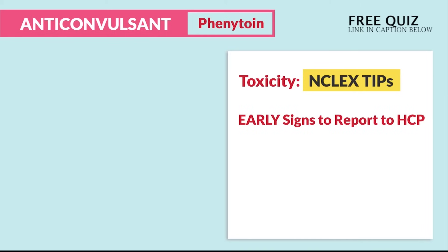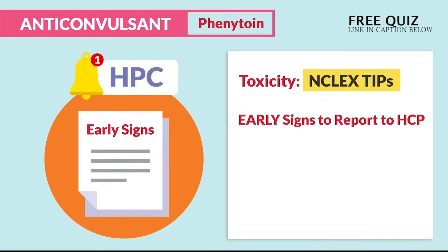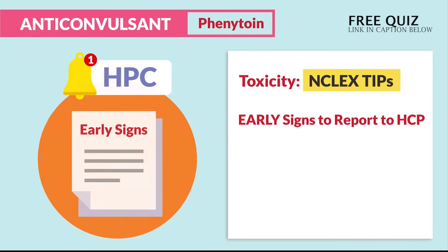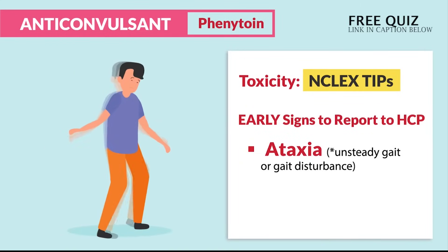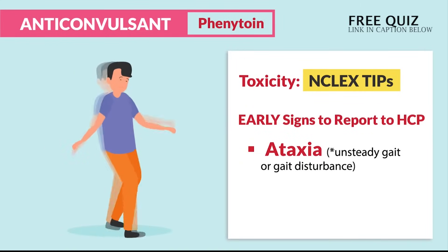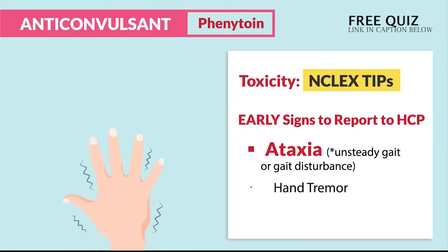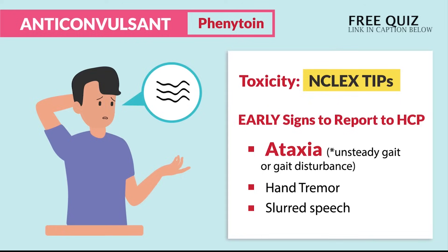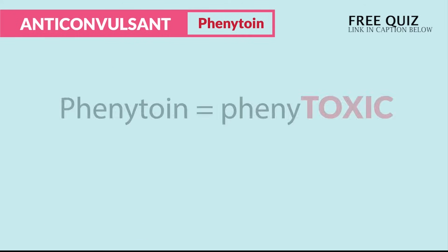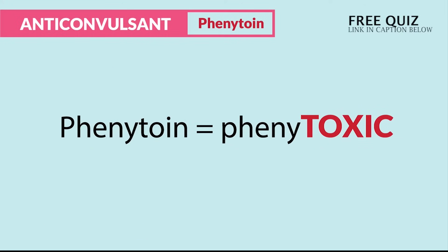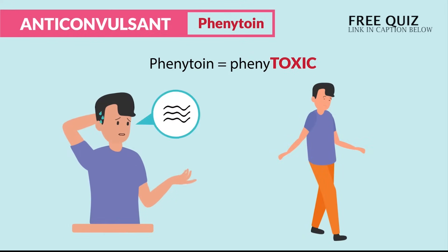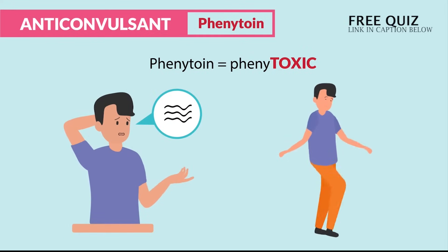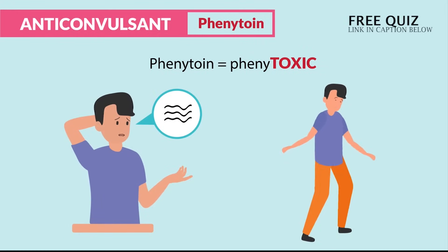The next key point is toxicity. The early signs to report to the HCP — these are the big NCLEX tips, so write this down. Ataxia, or an unsteady gait or gait disturbance, as well as hand tremor and slurred speech, or having trouble forming sentences. Think of it this way: phenytoin is phenytoxic — you can't talk and you can't walk.